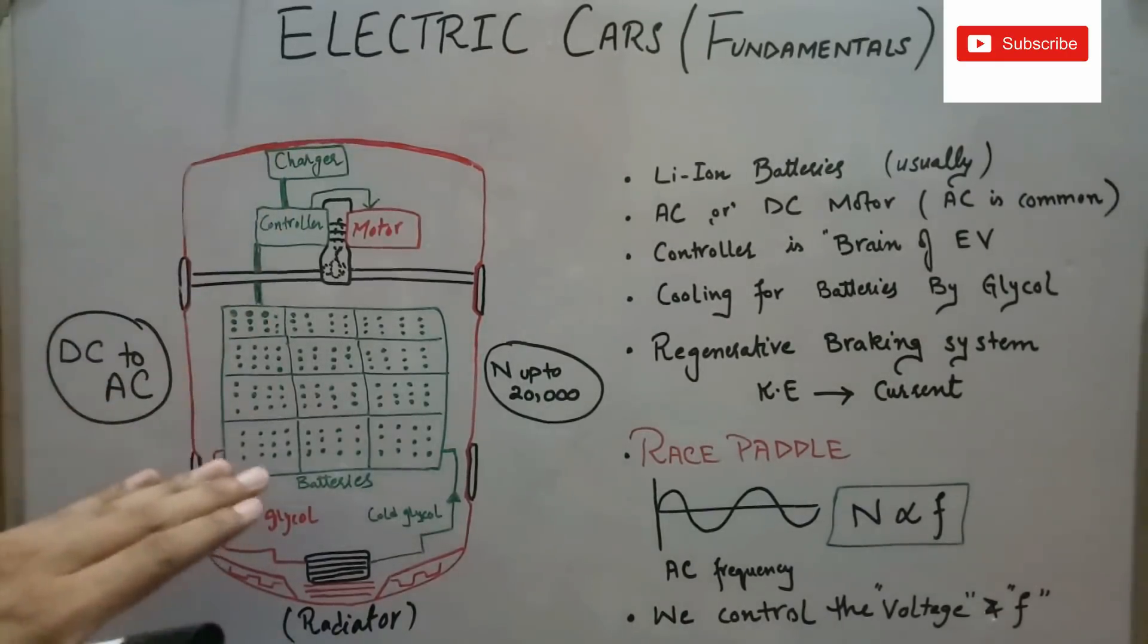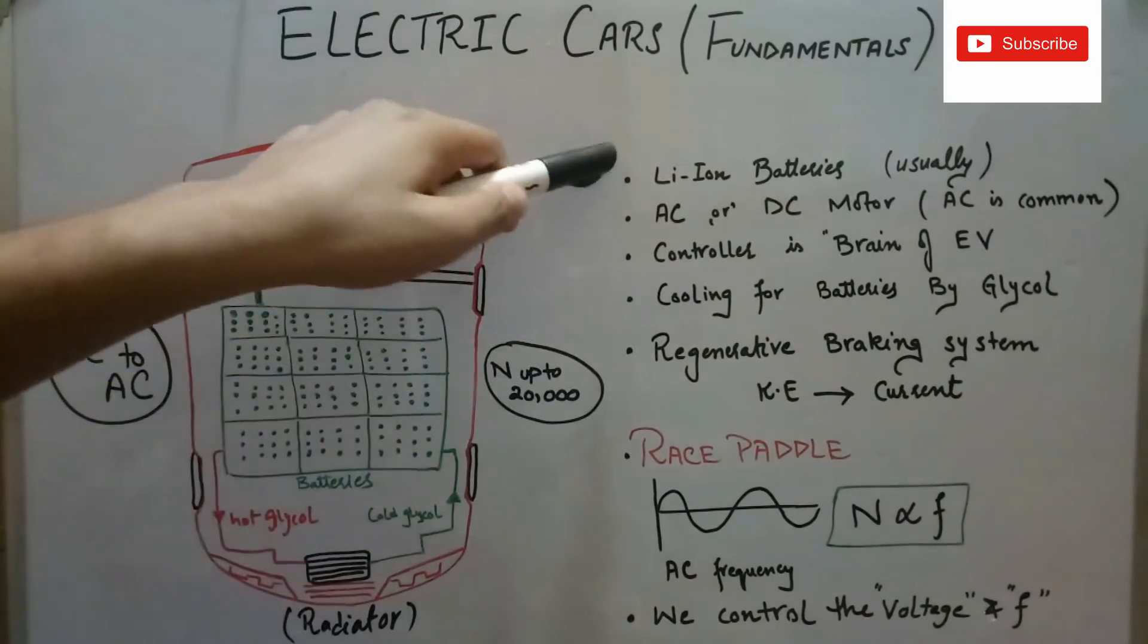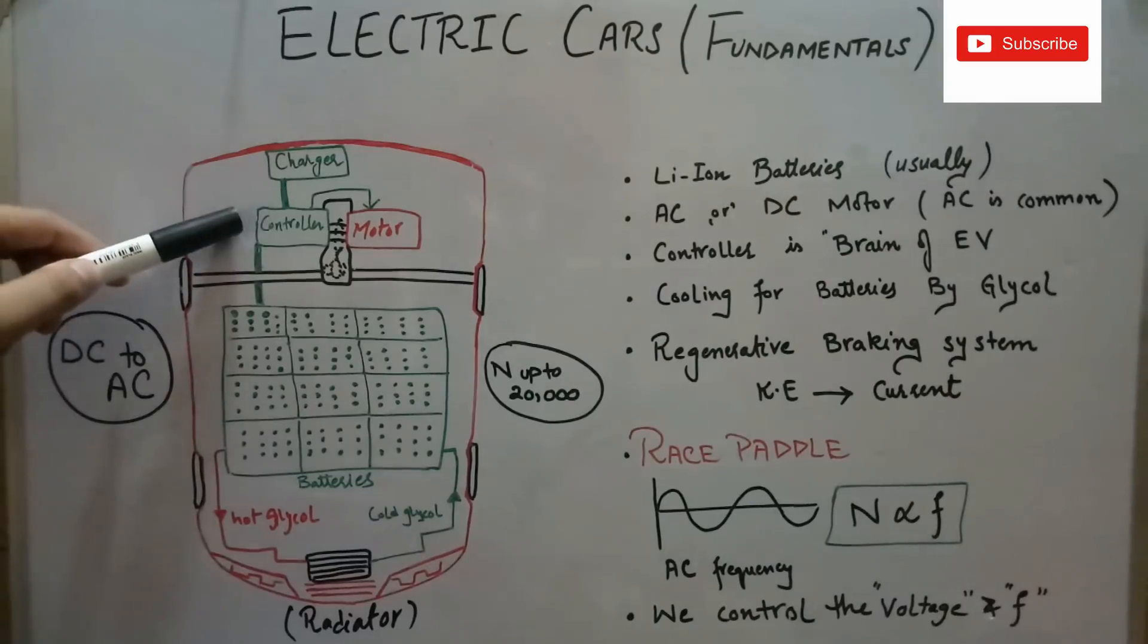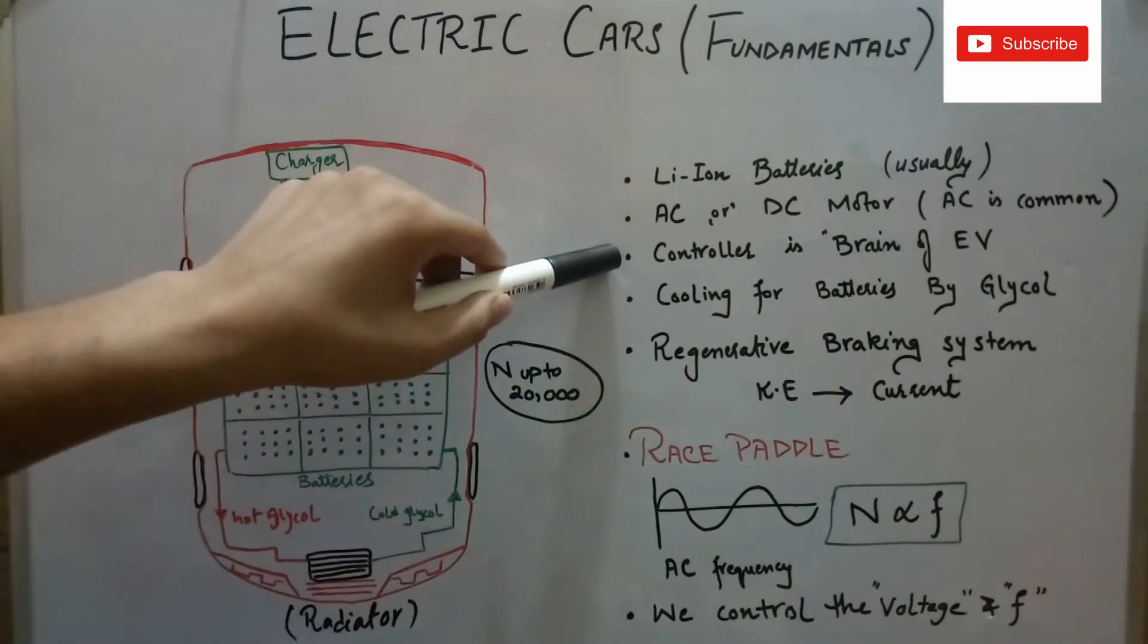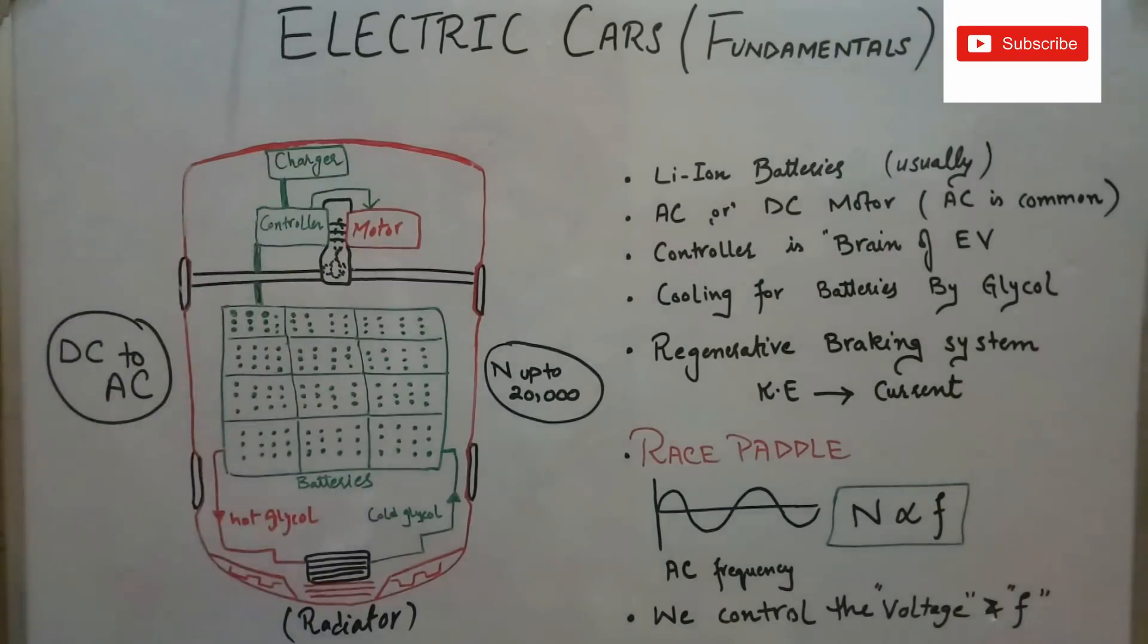In any electric vehicle, there are three major components: the lithium-ion batteries, which we are using in our daily lives as well; then there is a controller, which is the brain for any electric vehicle; and then there is an AC or DC motor. Usually, a 3-phase AC motor is preferred due to its low maintenance cost.